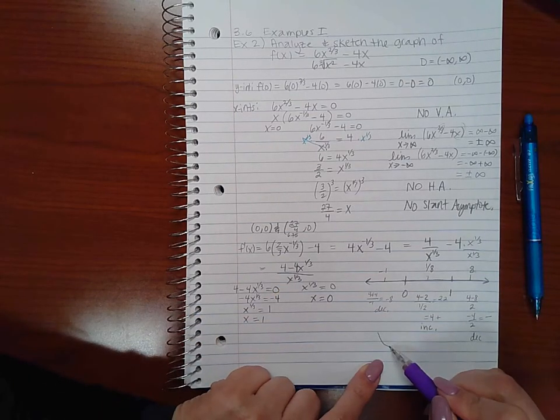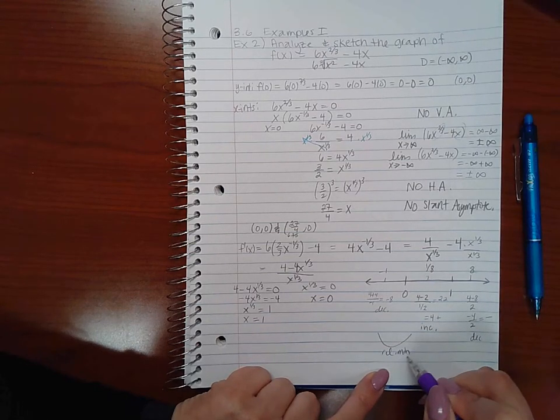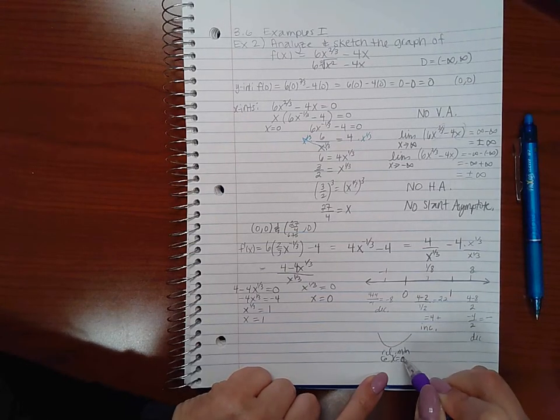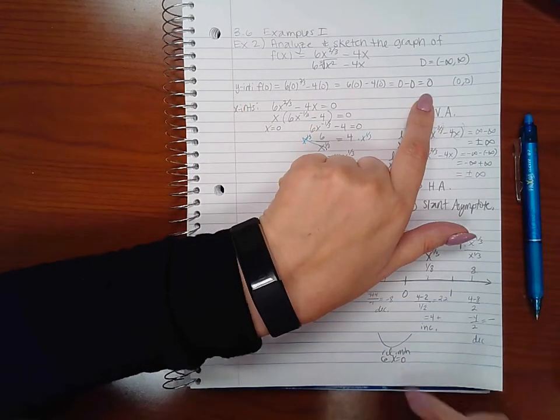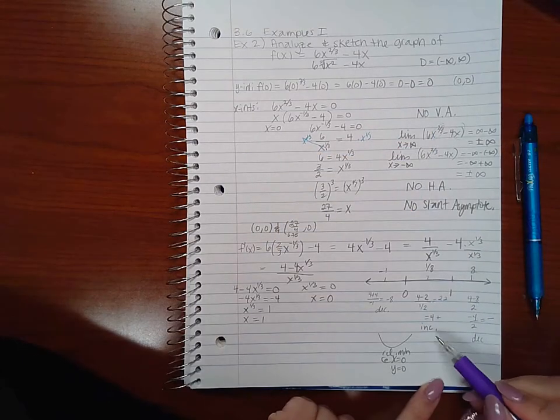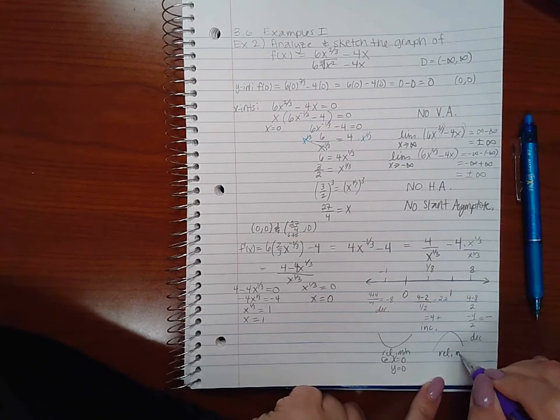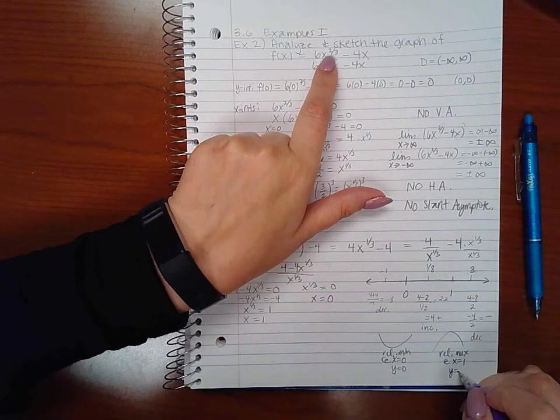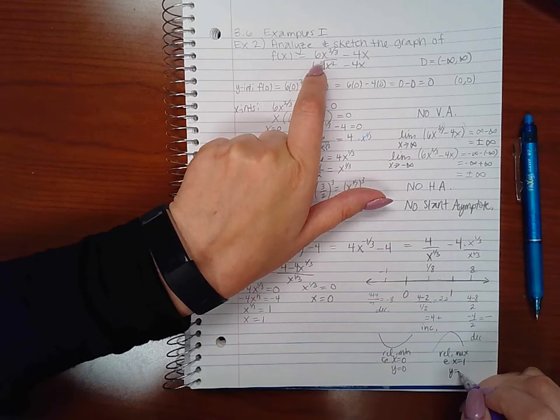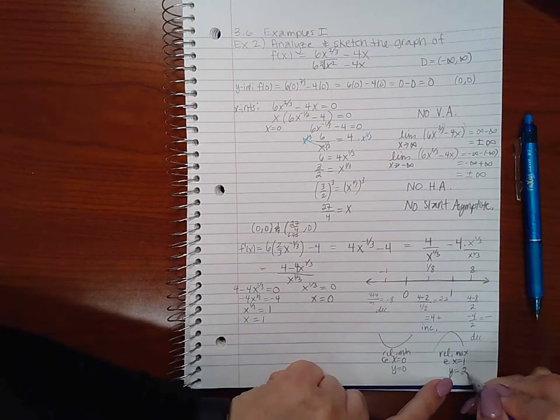So if I'm decreasing to the left of 0, increasing to the right of 0, that means there's a relative min at x equals 0. And if I want to know what the y value is, remember we already plugged in 0 for x and we got 0 for y. Here this is increasing at 1 and then decreasing, which means there's a relative max at x equals 1. And if you want to know the y value, plug in 1 up here. 1 to any power is 1 times 6 is 6. 4 times 1 is 4. So you end up with 6 minus 4, which is 2.